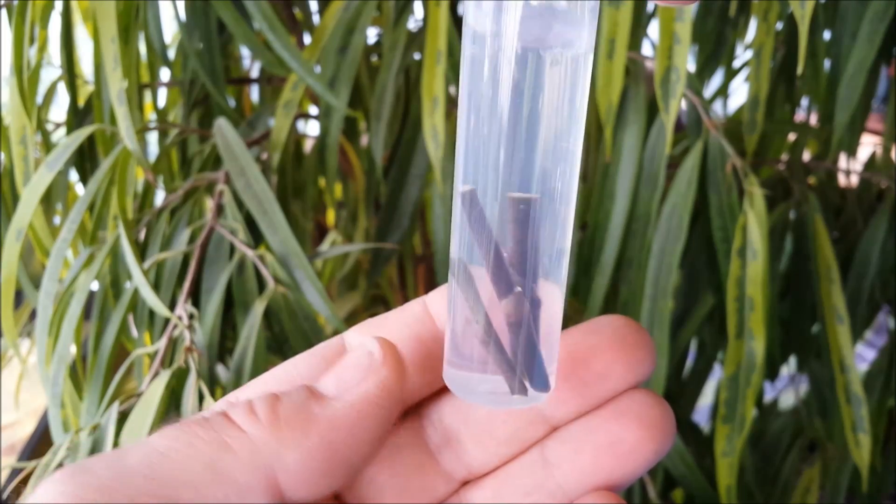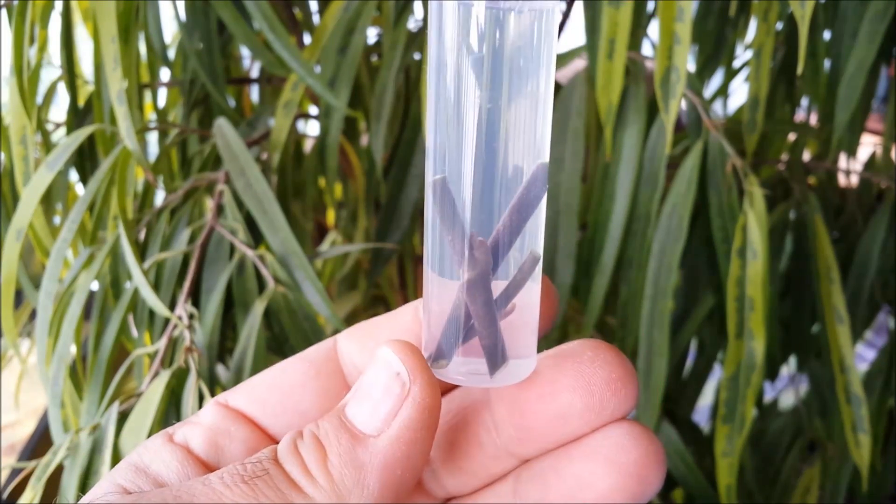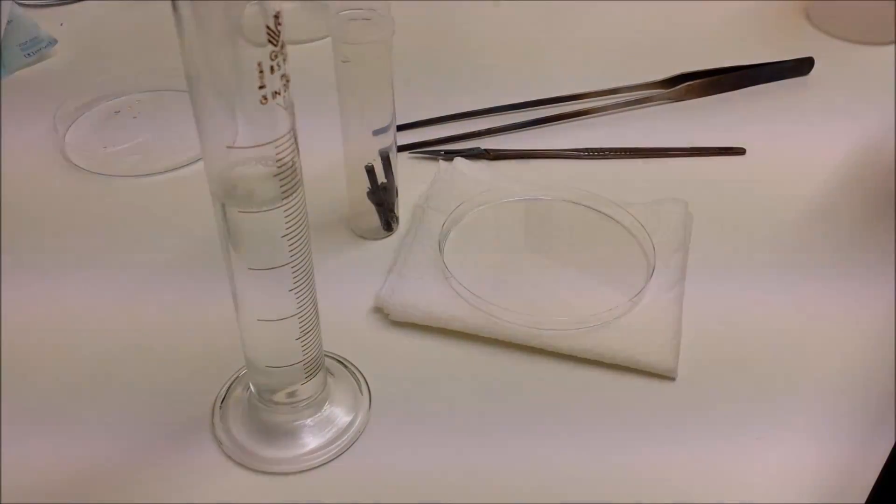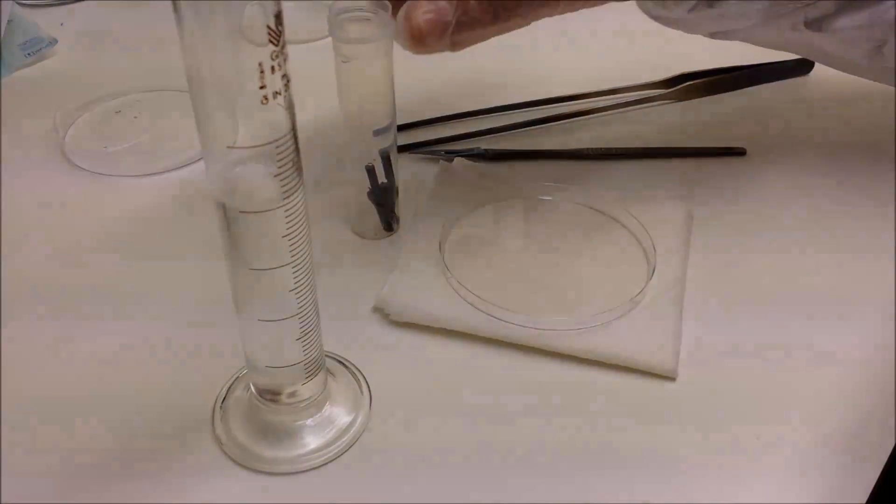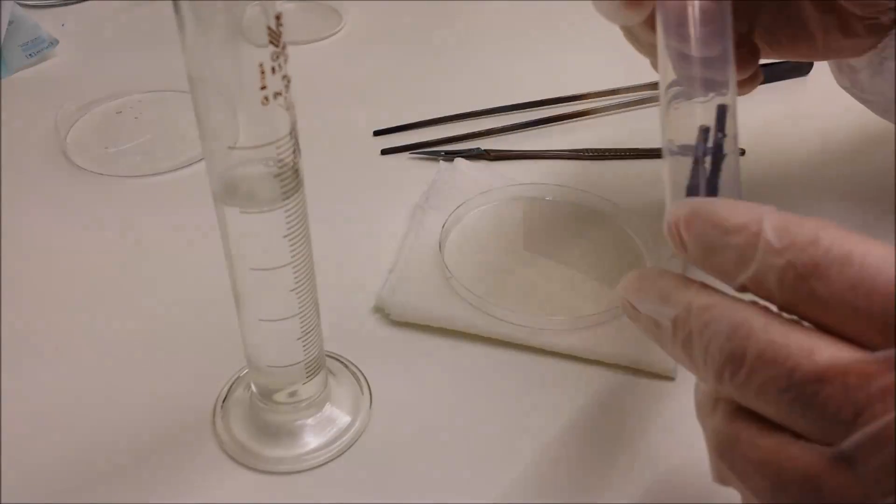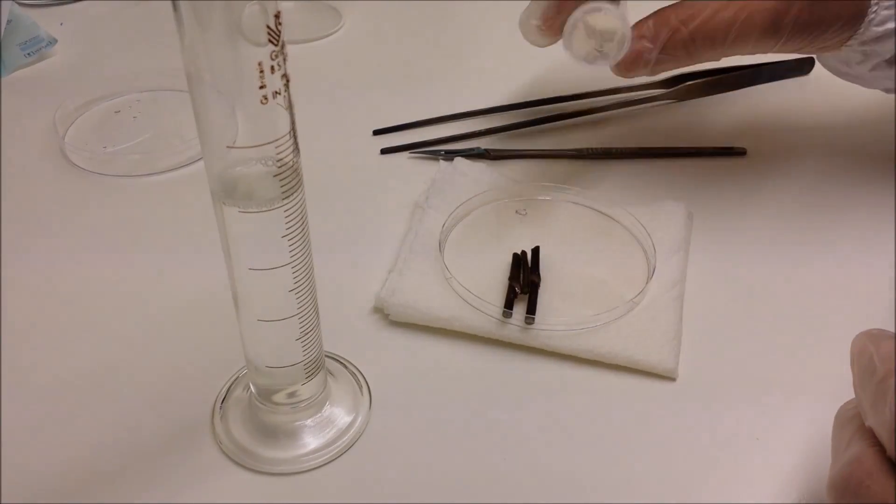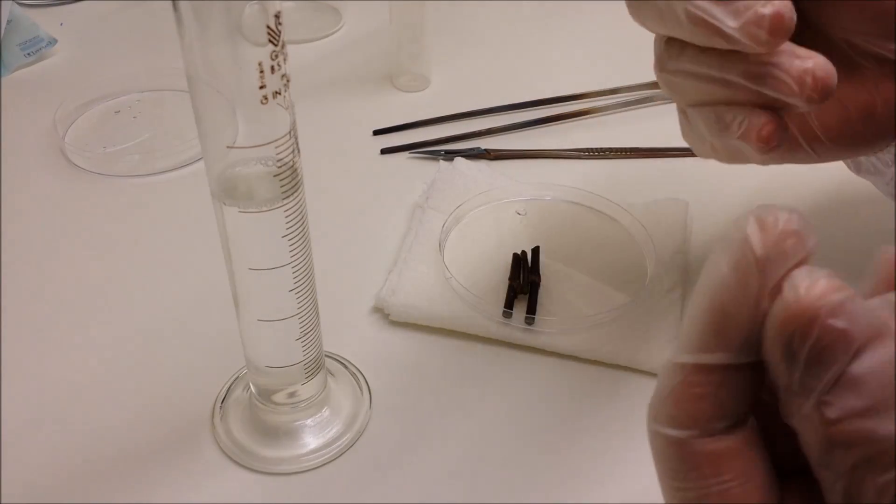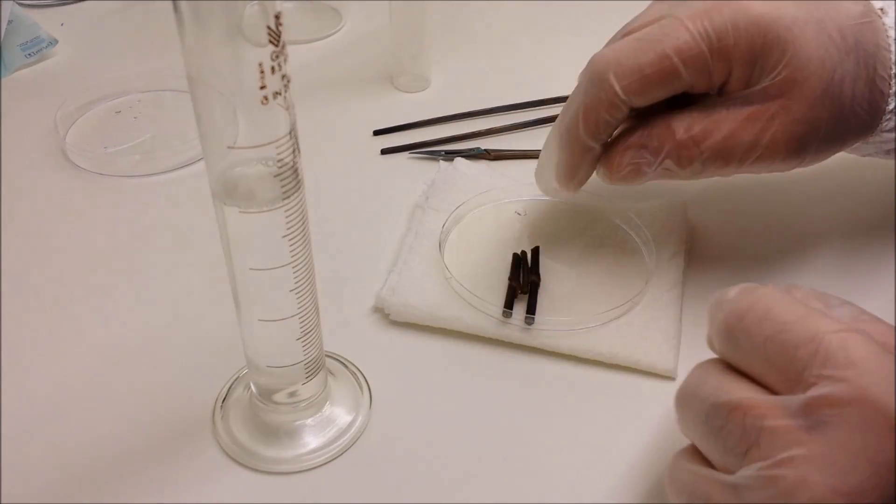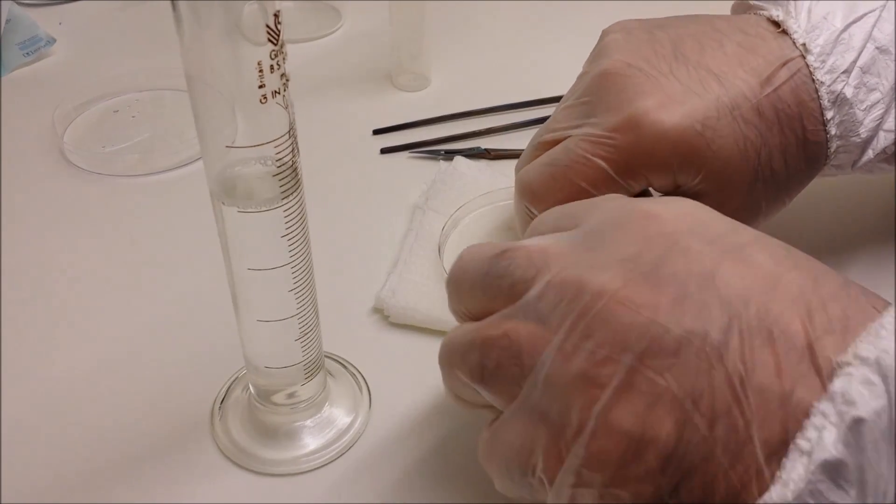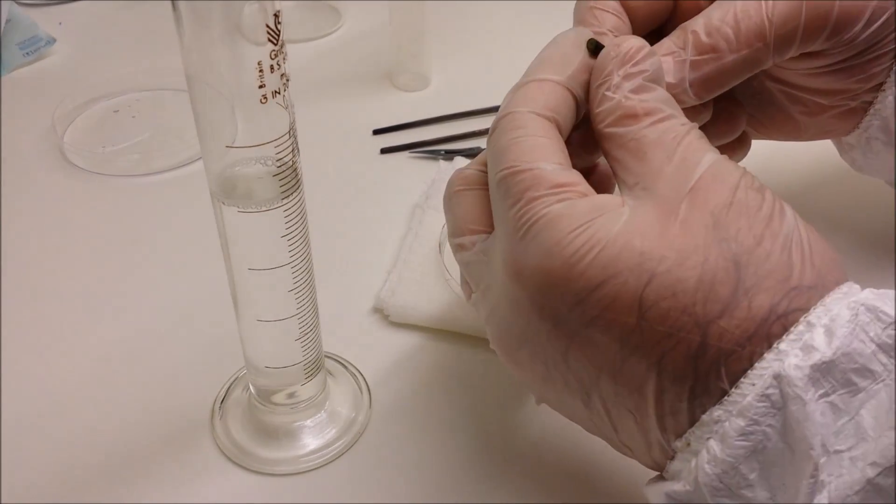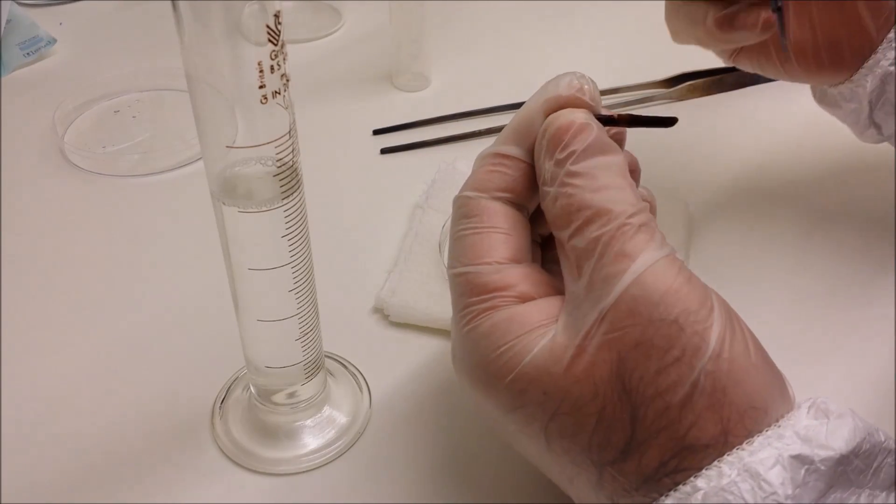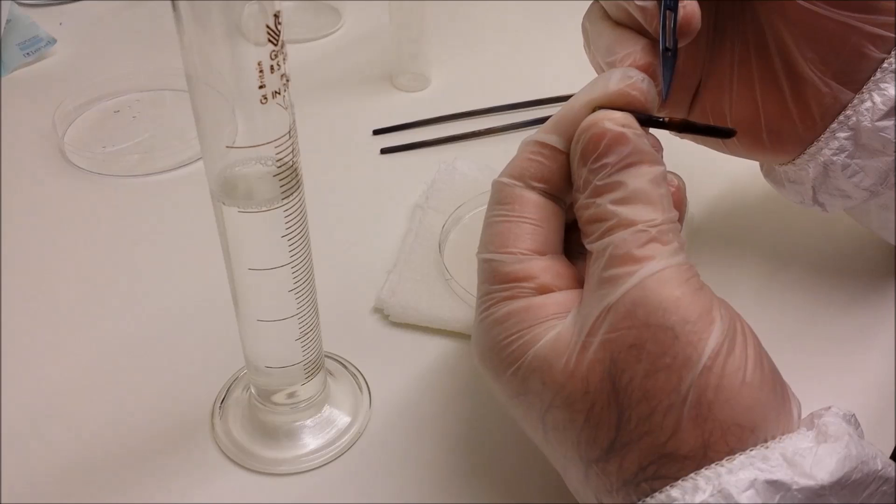Now that the stem cuttings have been soaking for 15 minutes, we can empty them onto the sterilized petri dish. Now I've already in advance sterilized my gloves with ethyl alcohol or isopropyl alcohol to remove any bacteria.